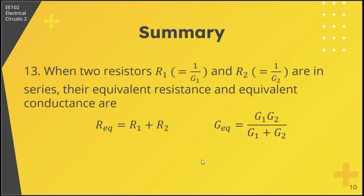Thirteenth, when two resistors R1 equals 1 over G1 and R2 are in series, their equivalent resistance and equivalent conductance are: R equivalent equals R1 plus R2, but the equivalent conductance equals G1 times G2 over G1 plus G2.